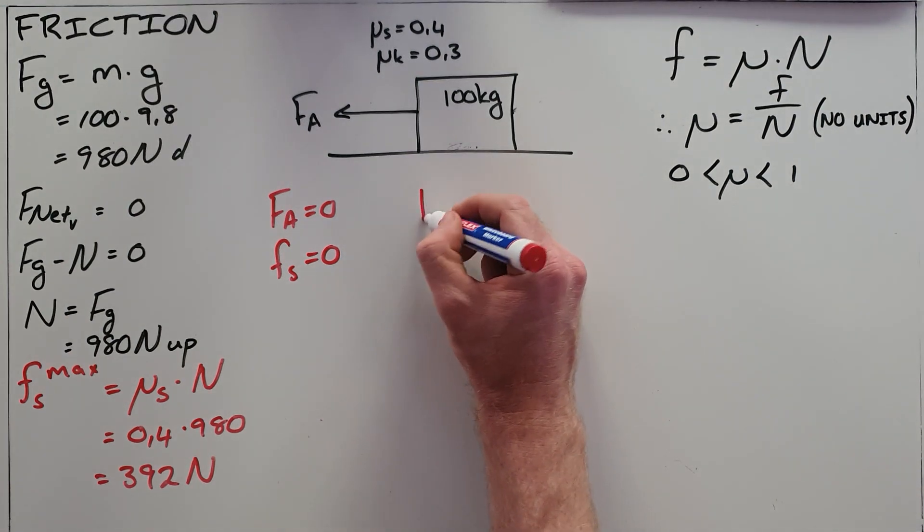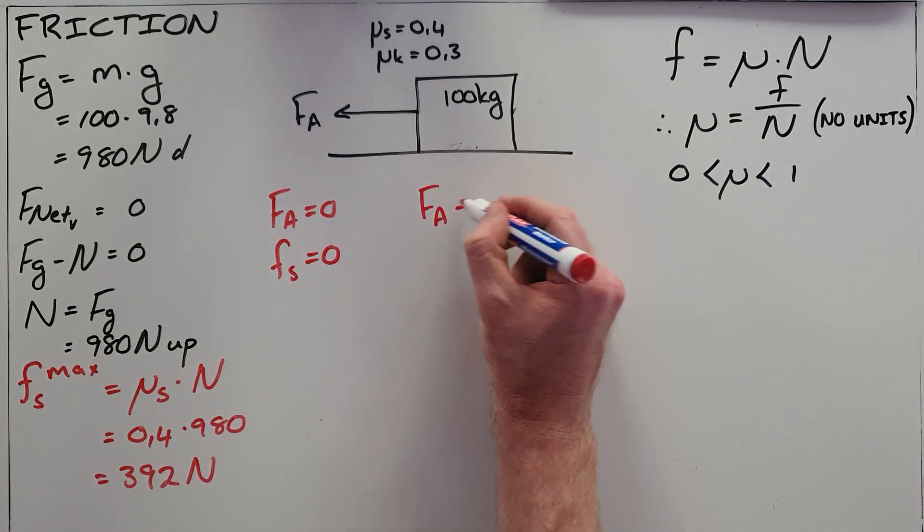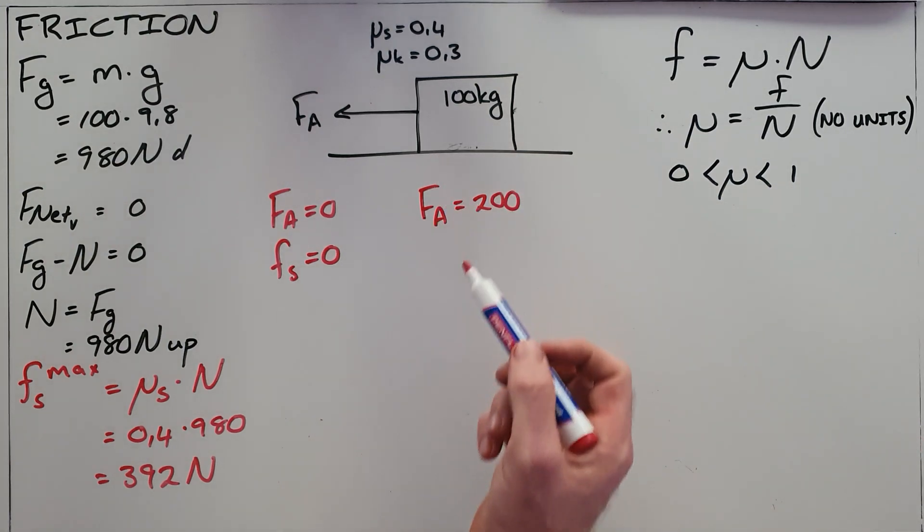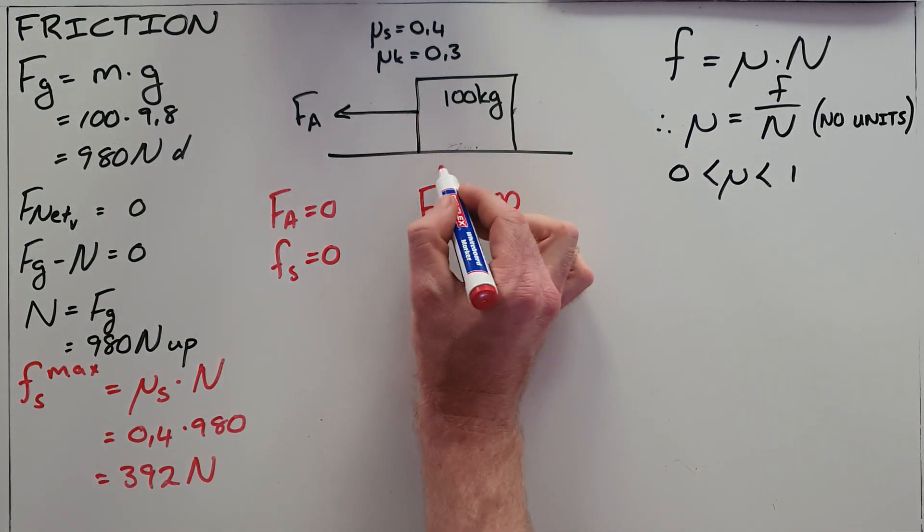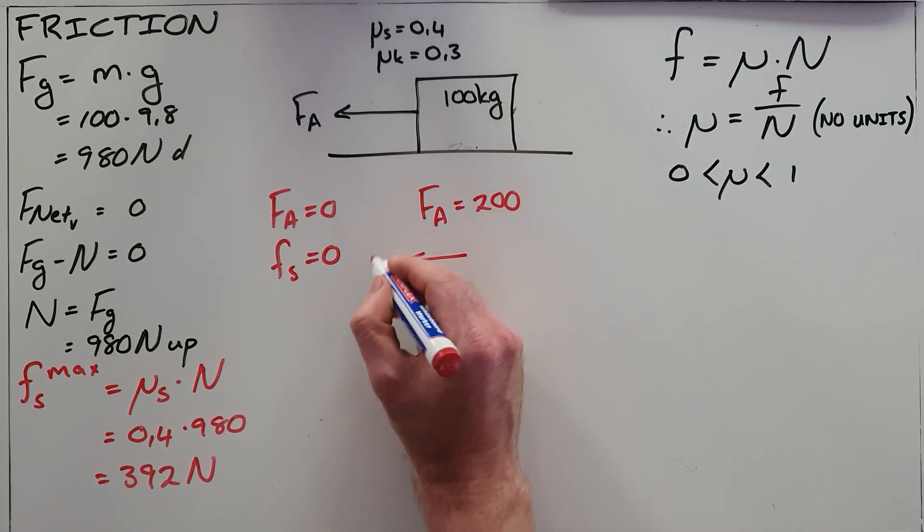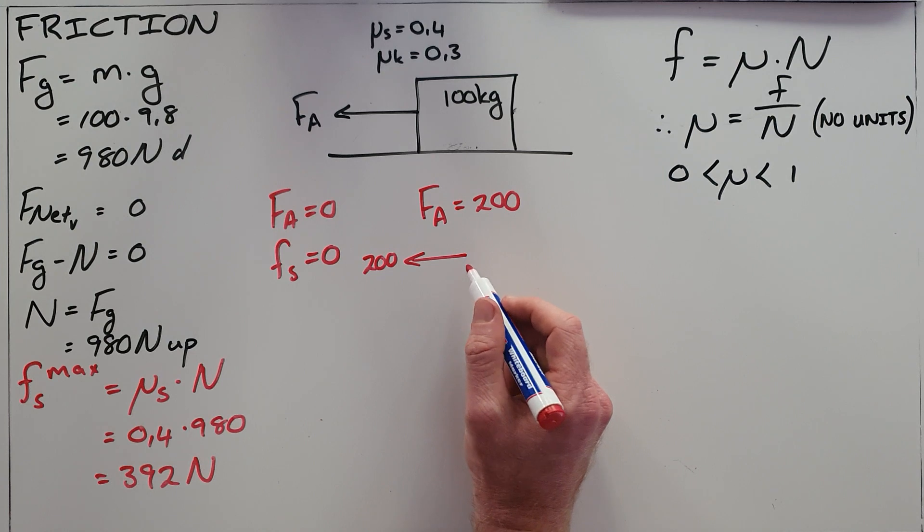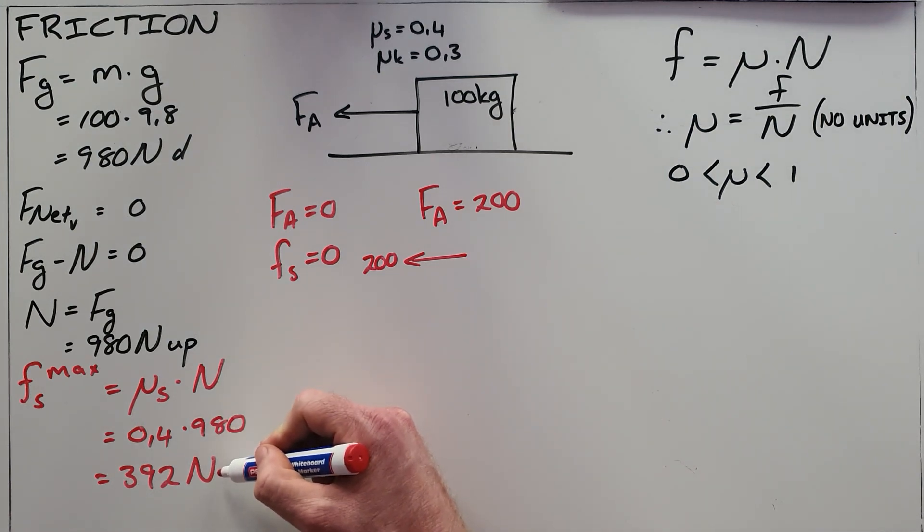If we now said that applied force was 200 newtons, we can very clearly see that there is a force of 200 newtons attempting to pull the object towards the left.